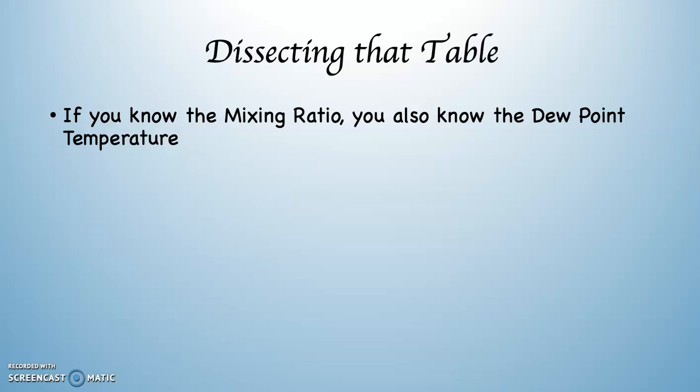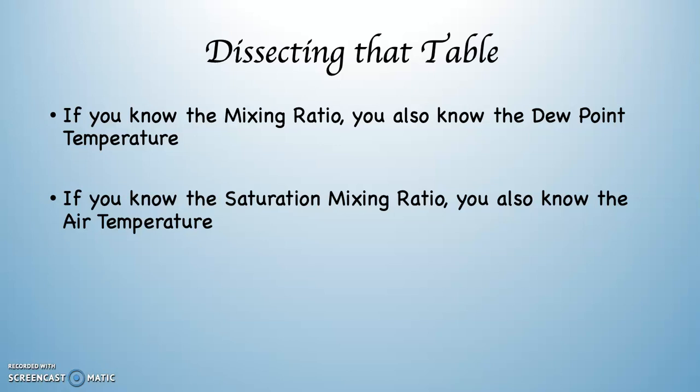You also know the dew point temperature. And if you know the saturation mixing ratio, you also know the air temperature. So mixing ratio is telling you how much water is actually in the air. Saturation mixing ratio is telling you how much water the air could hold if it was saturated. If you know the air temperature and you know how to use the table, you can figure out the saturation mixing ratio. And if you know the dew point temperature, you can also figure out the mixing ratio.